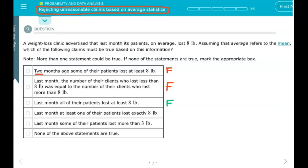'Last month at least one of their patients lost exactly 8 pounds.' We don't know that. There could have been half of them that lost 9 pounds, half of them that lost 7 pounds, and then the average would be 8. So we do not know that any lost exactly 8 pounds.